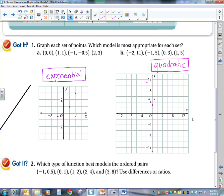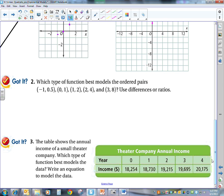Okay, so that's looking at the graph. Now we can also look at a set of ordered pairs. And if you're looking at a set of ordered pairs, you probably want to put it into a table first. So we're going to write, we have (-1, 0.5), we have (0, 1), (1, 2), (2, 4), and (3, 8).